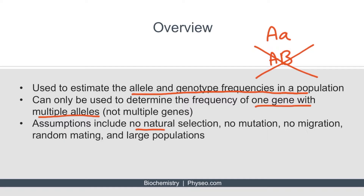When using this principle, there are several assumptions, including no natural selection, no mutation, no migration, random mating, and large populations.